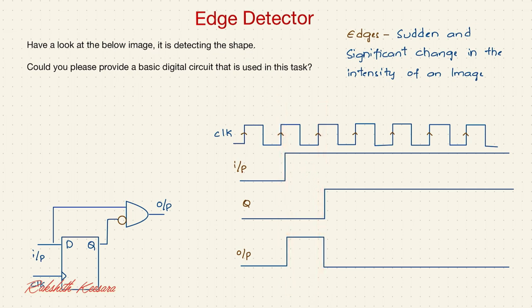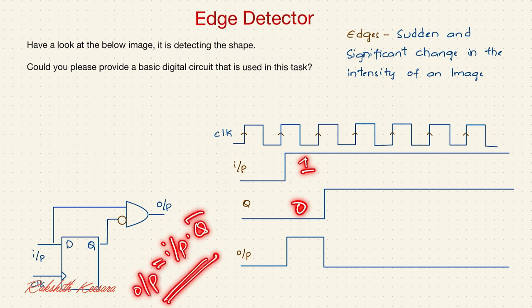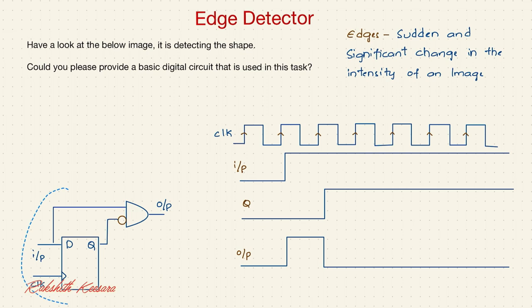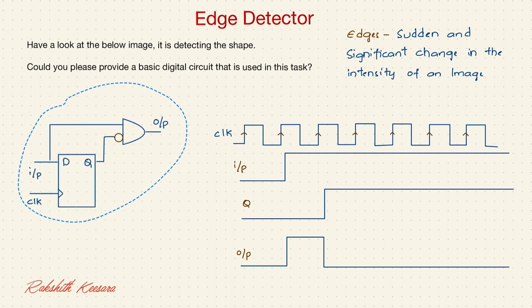So what should be that logic? Input is 1 and Q is 0. Output should be input into Q bar. So this is the logic in it. And this is the circuit that is executing it.